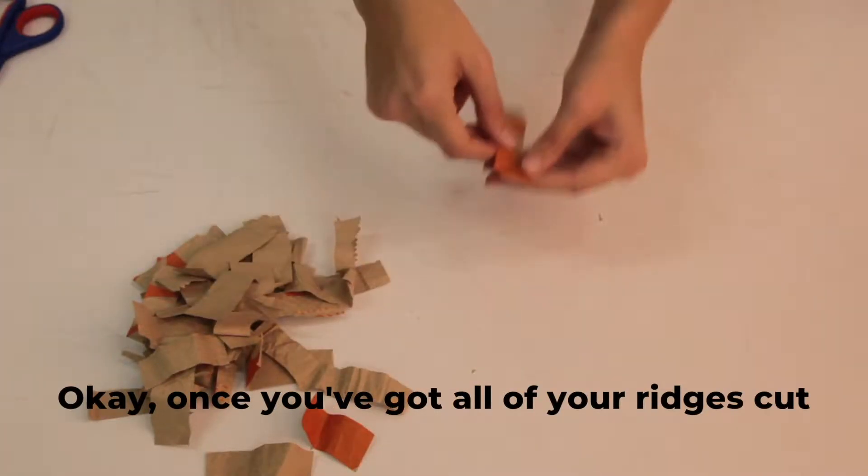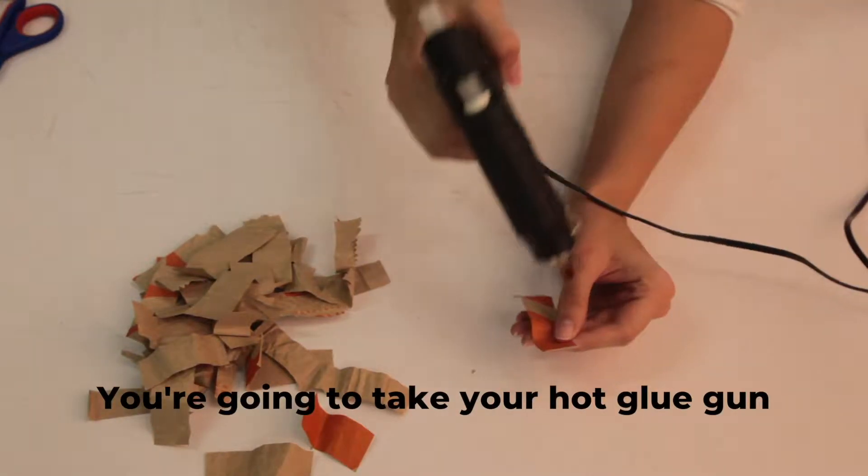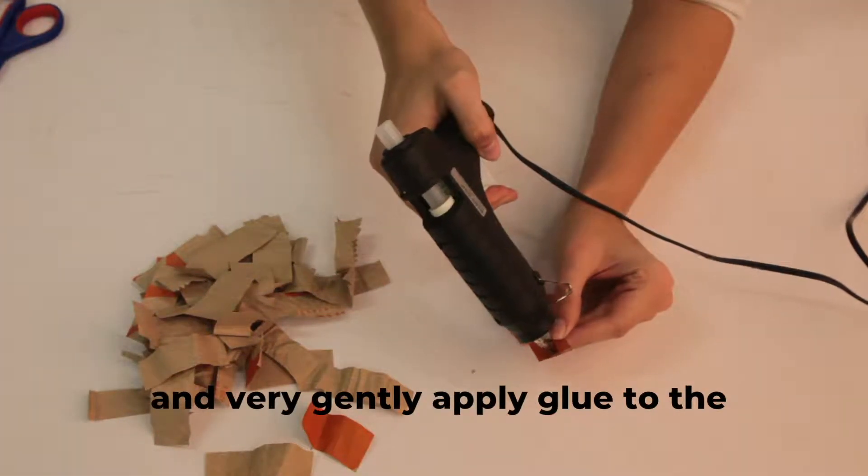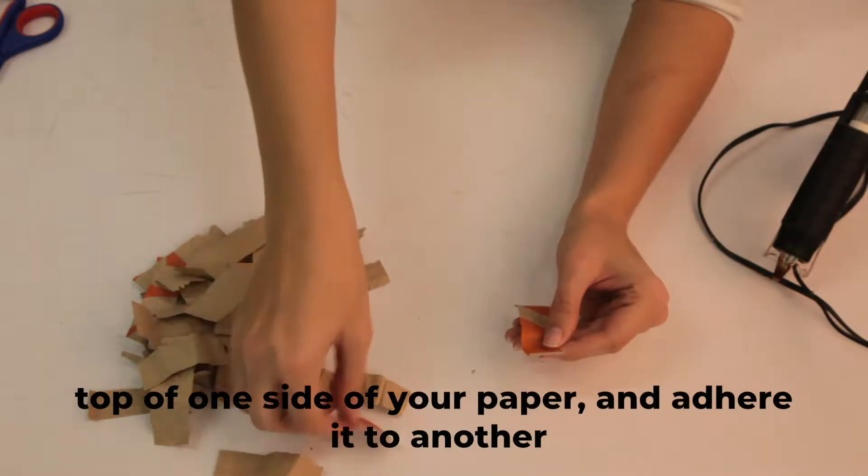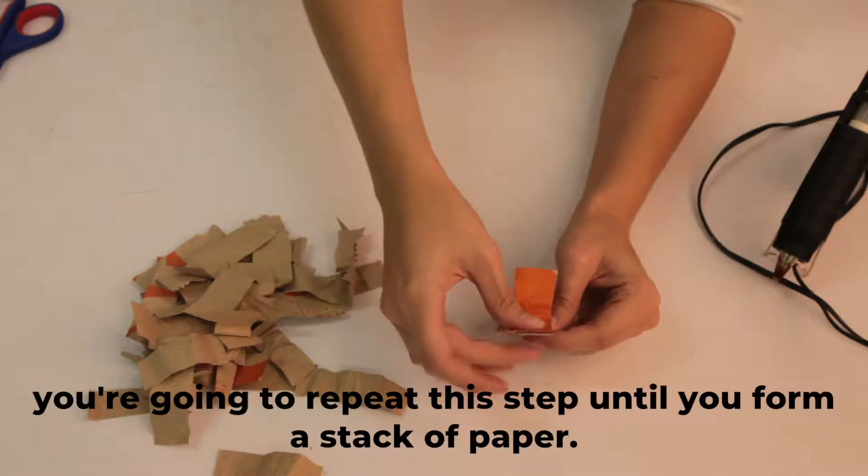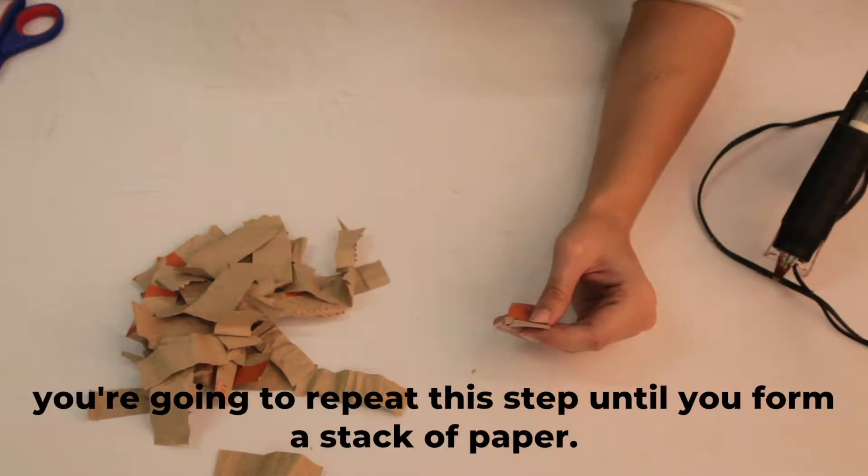Once you've got all of your ridges cut, you're going to take your hot glue gun and very gently apply glue to the top of one side of your paper and adhere it to another. You're going to repeat this step until you form a stack of paper.